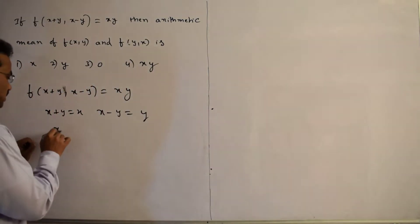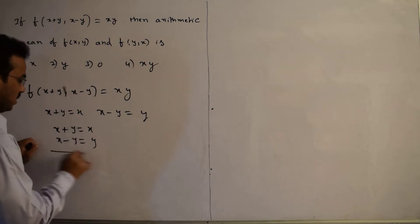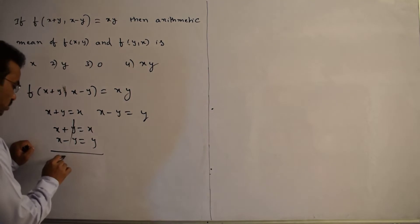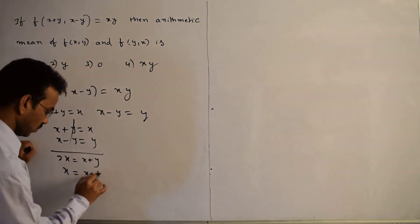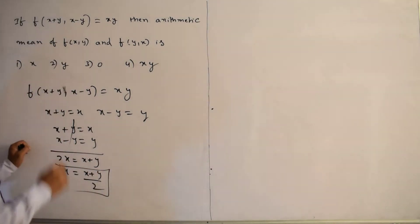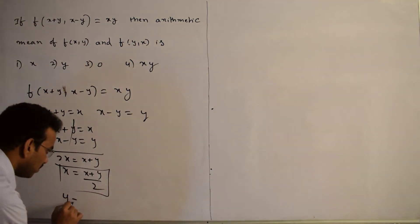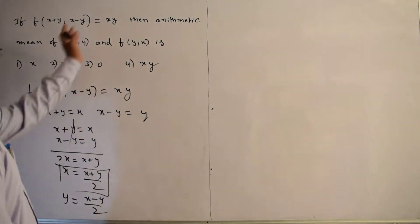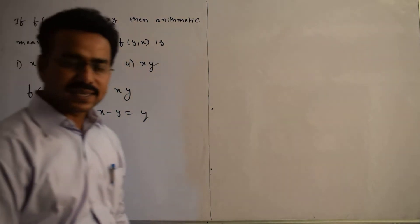Now we need to calculate the values of x and y. Adding the two equations: x+y and x-y, the y terms cancel, giving 2x = x+y, so x = (x+y)/2. Similarly, subtracting the two equations gives y = (x-y)/2.